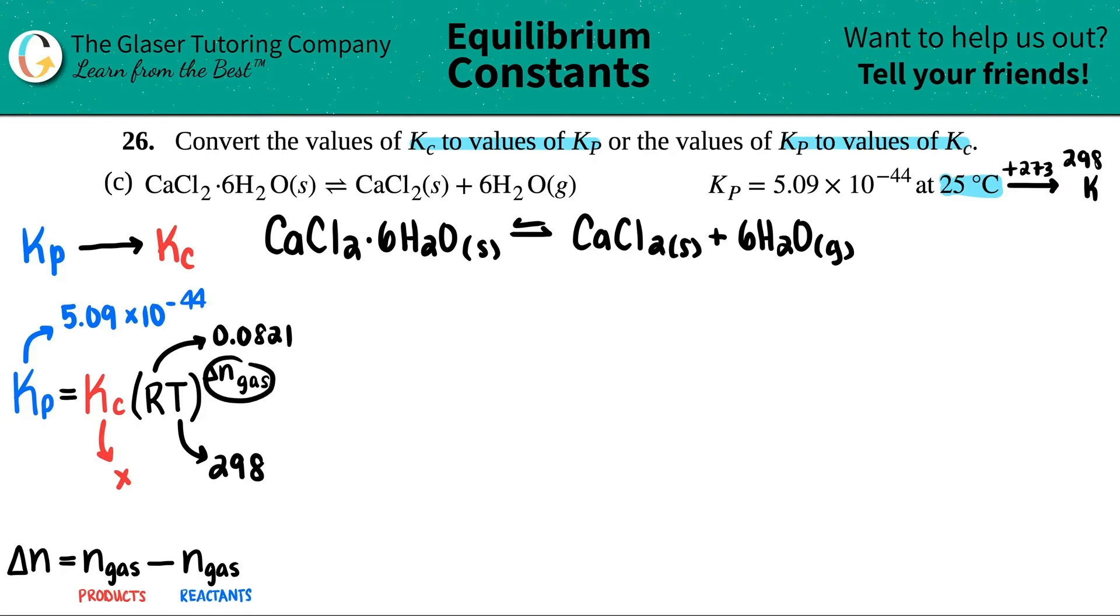And now here comes something pretty new. We have to raise the RT to the delta n gas. Now, the delta n is just a fancy way for saying a change. In this case, it's all the moles of the gas of the products minus the moles of the gas of the reactants. Remember, N is the letter they use for moles. But they're very specific. It has to be a gas. So just go back into the formula and check off what we can use.